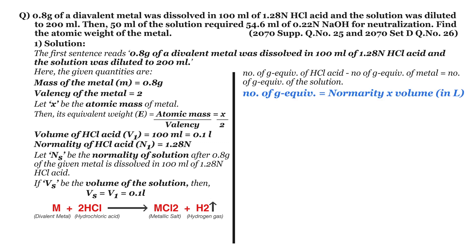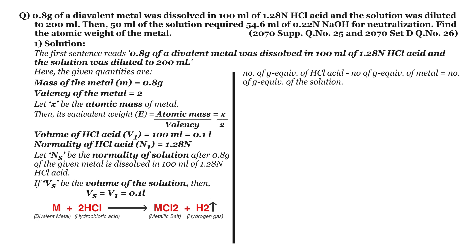We know that number of gram equivalents equals normality times volume in liters, or mass in grams divided by equivalent weight. Hence we can write: N1·V1 − M/E = Ns·Vs. Let this be equation 1.